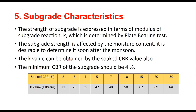The parameters for subgrade characteristics are the same as in normal rigid pavement design — strength is considered in terms of modulus of subgrade reaction estimated by plate load test. This is affected by moisture content, so it is suggested to determine the K value soon after the monsoon when the subgrade is in its weakest condition. It can also be estimated from soaked CBR value using a table in the code. The minimum CBR of subgrade should be 4%.